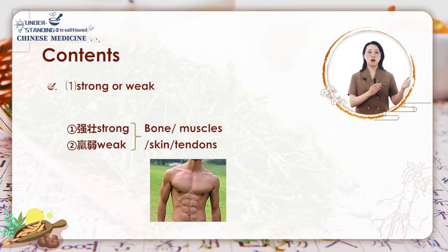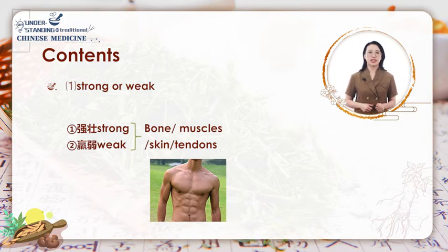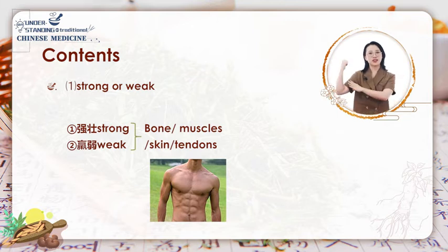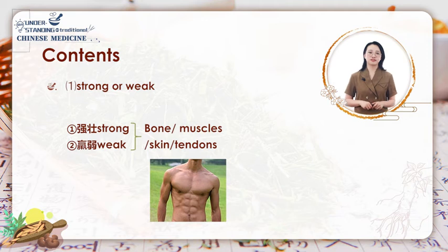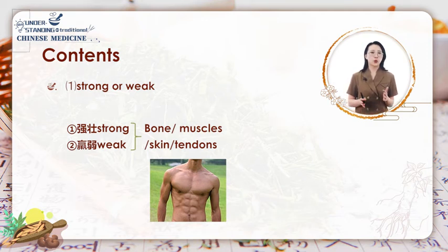The first aspect is the strong or weak physical constitution. The strong physical is manifested as a sturdy build, broad chest, strong muscles and tendons, and lustrous skin, all supported by the abundant qi, blood, fluid, and essence from the zhangfu organs. In cases of illness, such individuals may recover quickly with a favorable prognosis.